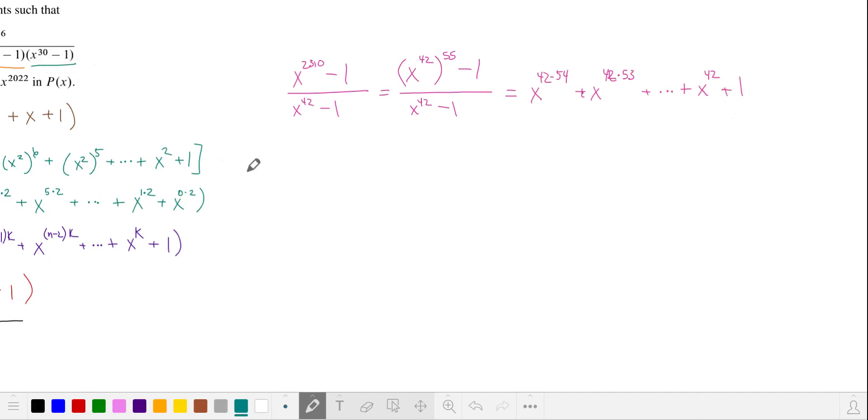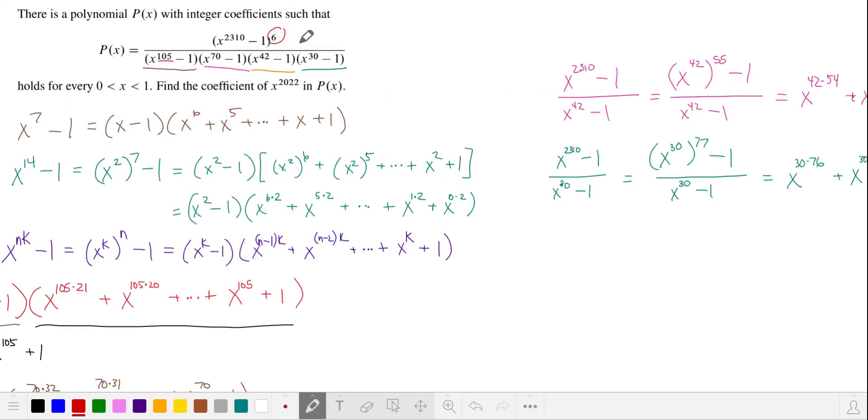Our last one is x to the 30 minus 1. 2310 is 30 times 77. And this is our second factor. We've canceled out four of our six factors in the numerator, so we're left with two.